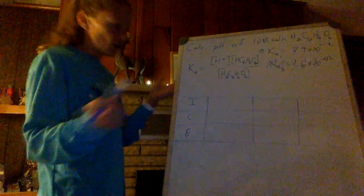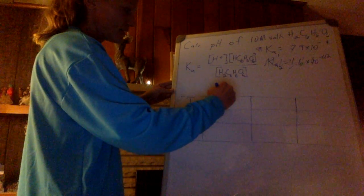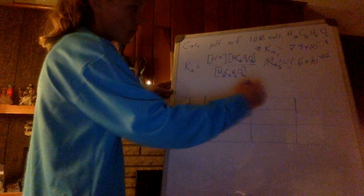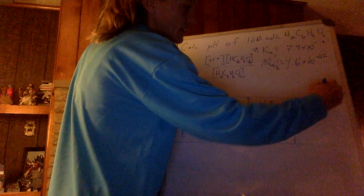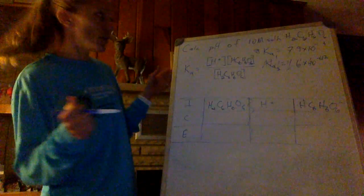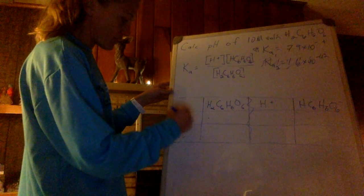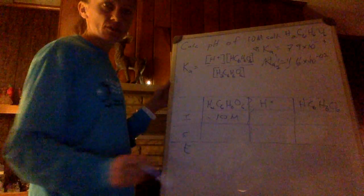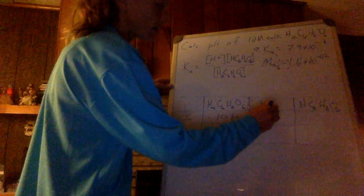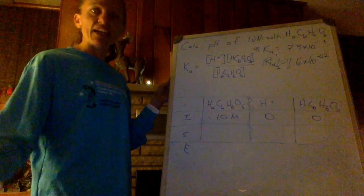So what do I do? What I always do, ICE chart. I've got this acid breaking down into hydrogen and HC6H6O6 minus. Cool. What is it? Point, I guess I should shift that down one more. There we go. Point 0.10 molar, acid to start with, no hydrogen, and none of the ion, because it hasn't dissociated yet.